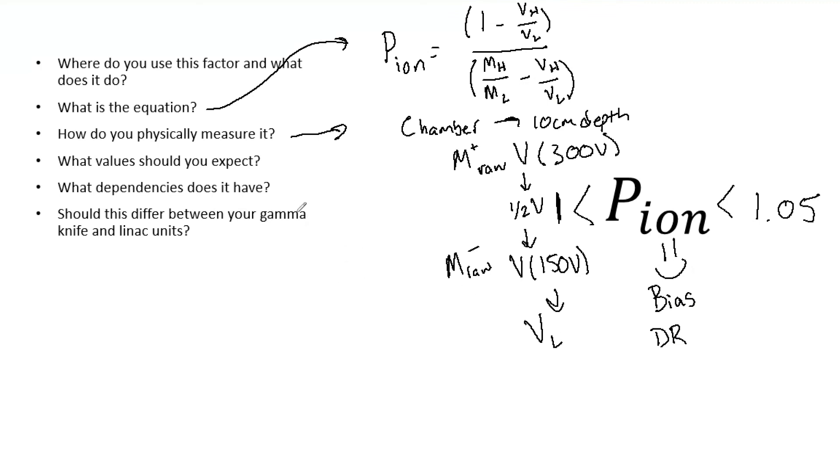Because of that, should the values between gamma knife and LINAC differ? And they should. So continuous radiation first of all is going to have the lowest P ion values.